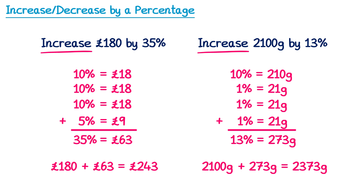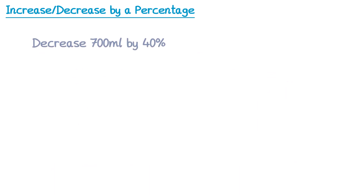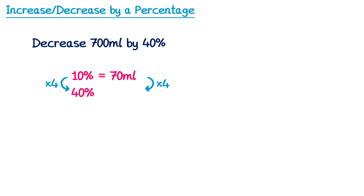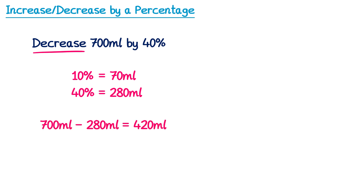Now let's look at how we do a percentage decrease. Decrease 700 millilitres by 40%. We start by finding 40%, but since it says decrease, we subtract it rather than add it. Finding 10% gives 70 millilitres; multiplying by 4 gives 40%, which is 280 millilitres. Since the question says decrease, we subtract: 700 − 280 = 420 millilitres.